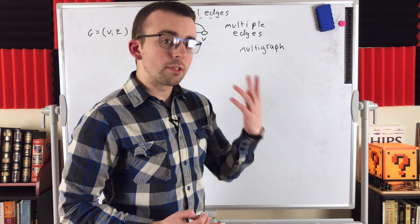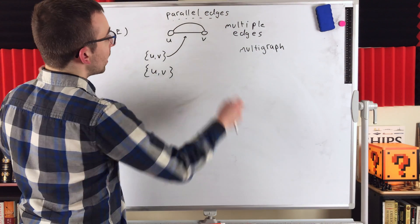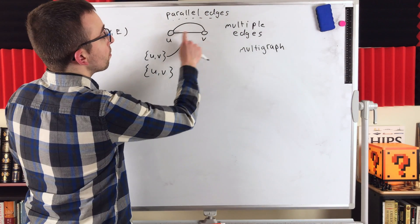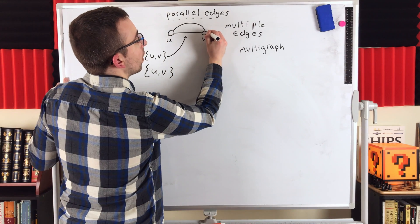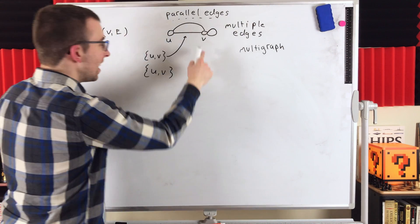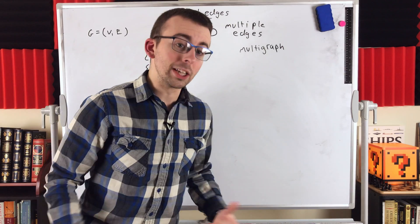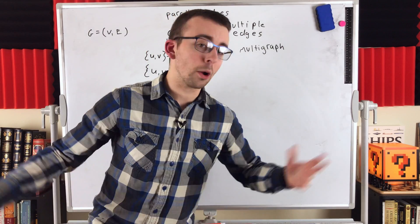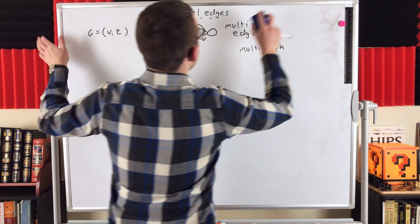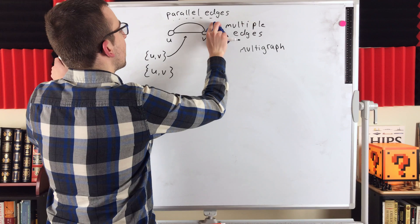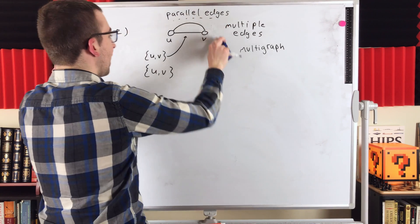Some people use the term multi-graph to refer to a graph that allows parallel edges and also allows what are called loops — edges that join a vertex to itself. Other people use the term pseudo-graph for that. But our primary focus here is just talking about parallel edges, so let's get back to that.